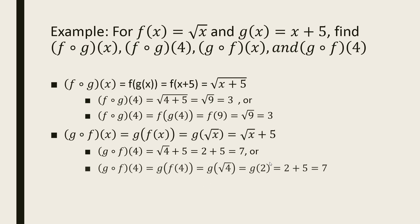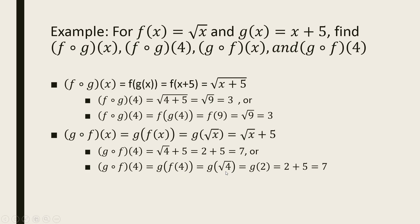We can also find this step by step: plug 4 into f to get f(4) equals square root of 4 equals 2, then plug 2 into g to get g(2) equals 2 plus 5 equals 7. Notice that f(g(4)) is not the same as g(f(4)) — one gives you 3, the other gives you 7. So the order in which you compose functions does matter.